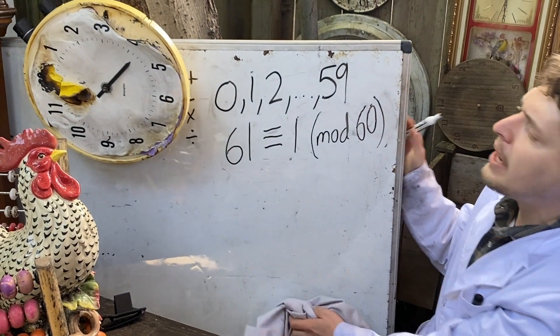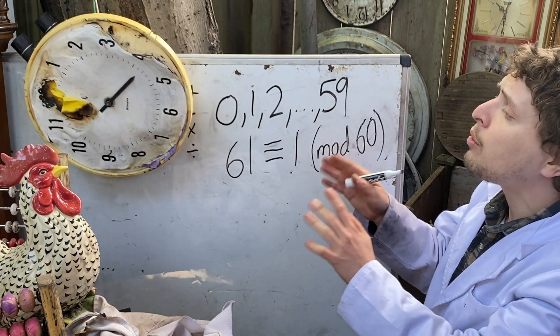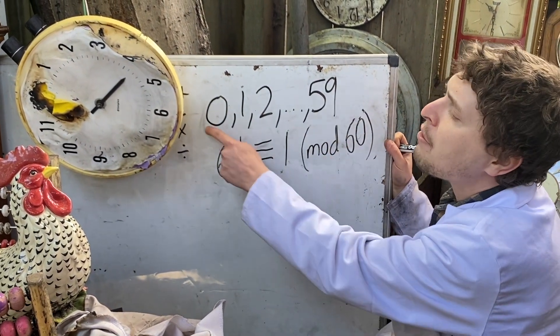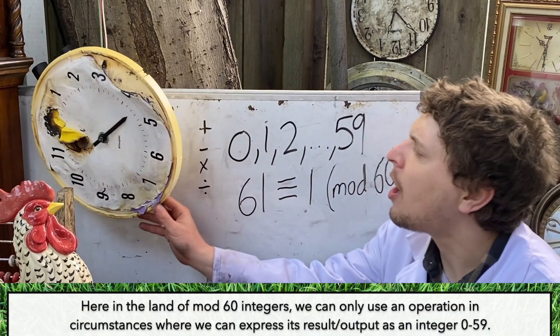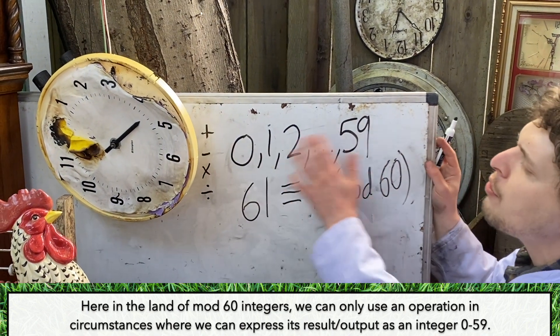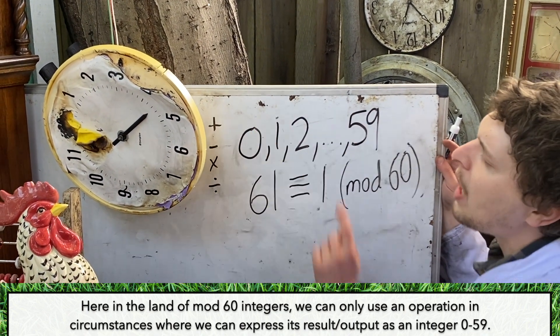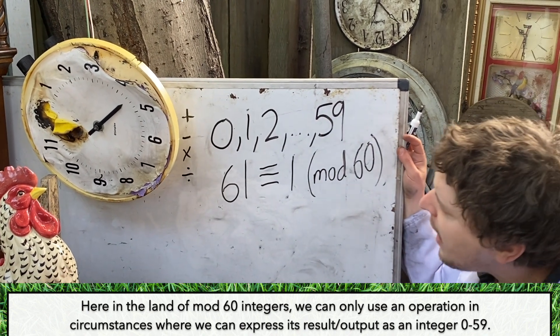Now back to our clock minutes, where we're just talking about integers, and we will reduce them to where they end up minute-wise on the clock. Which of these operations still have that property in this land, where we could take two members of this set, apply one of the operations, and get another member of that set.